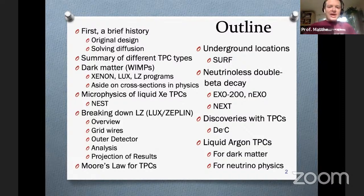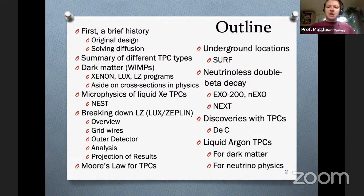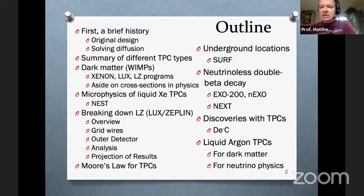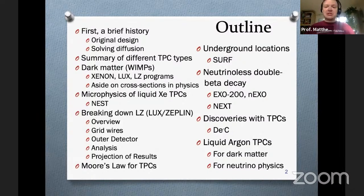Emphasizing how this is a broad-based technology, we'll move away from dark matter and look at neutrino-less double beta decay, talk about the EXO and NEXT experiments, which are TPCs. We'll look at what has already been discovered with TPCs, since we have not found dark matter yet. And at the end, we'll make the connection between liquid xenon TPCs and liquid argon, which are extremely similar. Liquid argon TPCs have been used for both dark matter and also, in a really big way, in neutrino physics.